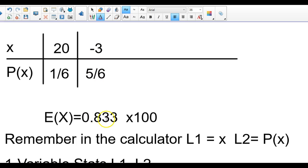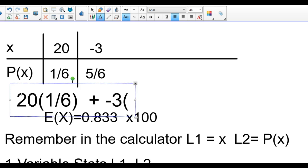To figure out this expected value here, I can do one of two things. I could just do 20 times 1/6 plus negative 3 times 5/6 and I'll get 0.833.